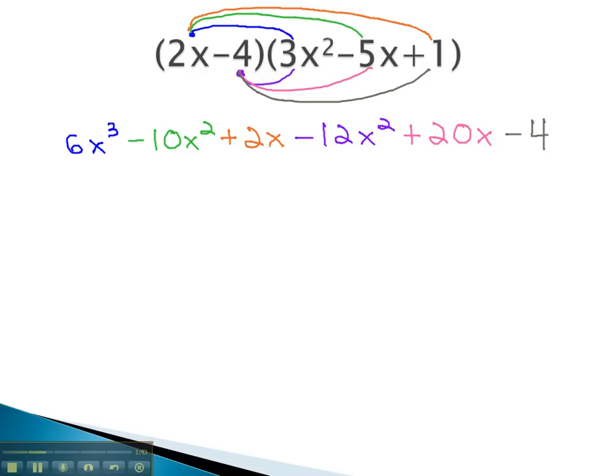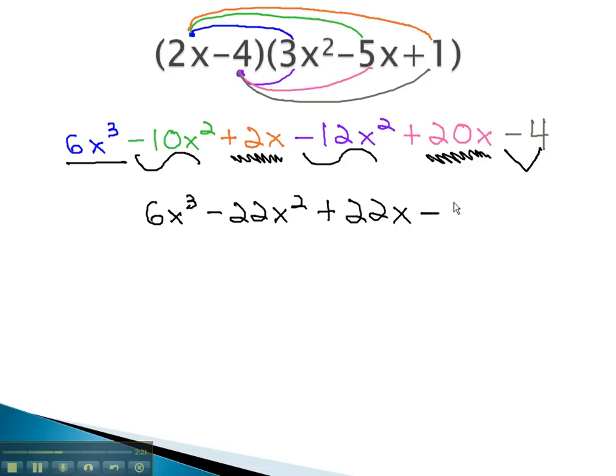Once we have distributed each term through the parentheses, we will simply go back and see if we have any like terms. There is no term like the 6x cubed. The negative 10x squared is like the negative 12x squared. This gives us negative 22x squared. The 2x is like the 20x. This gives us 22x. Finally, the negative 4 at the end has no like term, and we get our final solution.